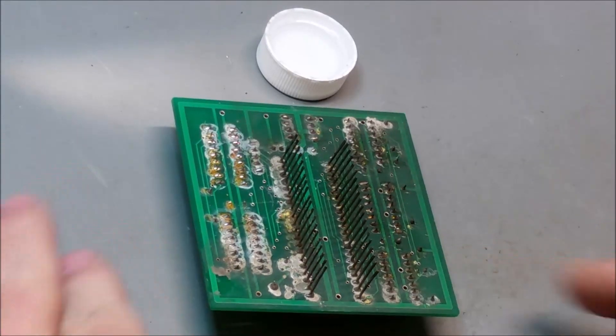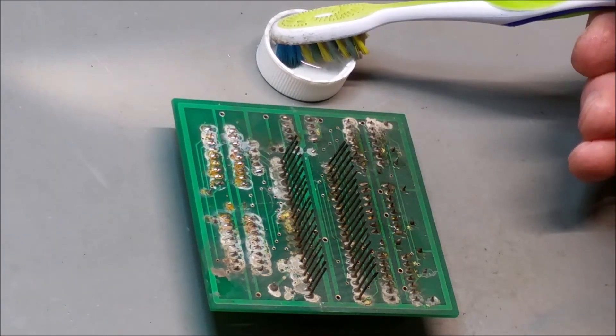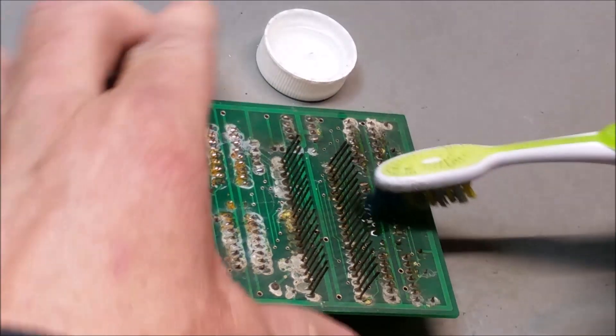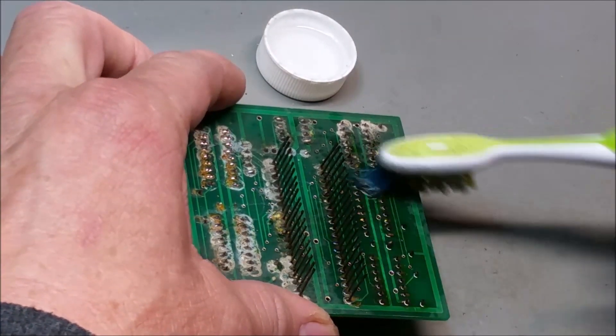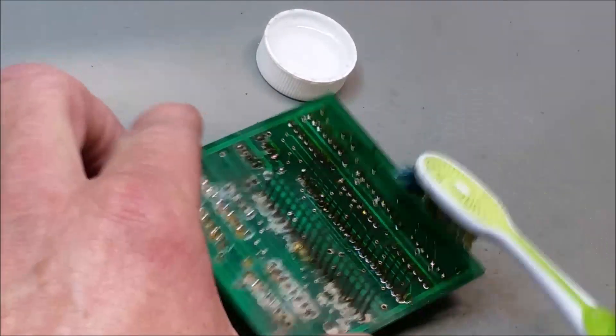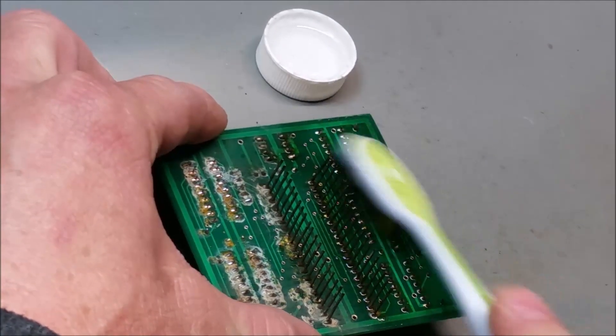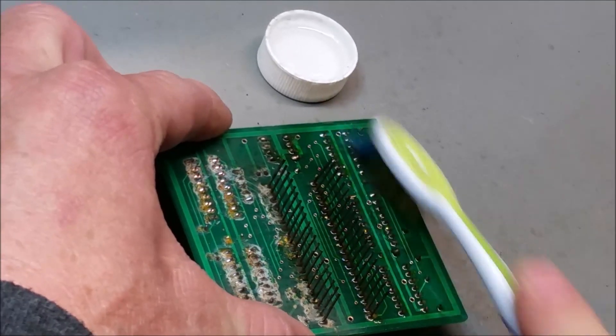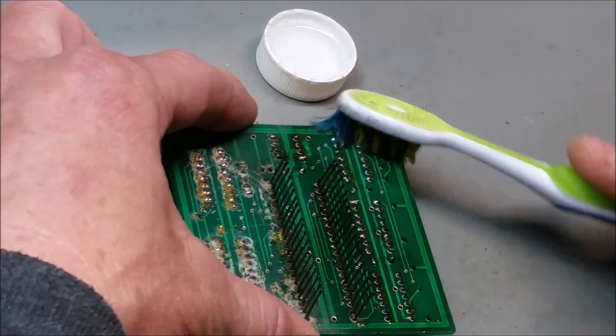This works pretty well on most things. So I'll just dip a toothbrush in a little isopropyl alcohol and start rubbing it on here. You can see it's starting to dissolve all that gunk.